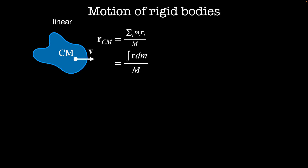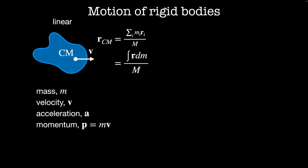For linear motion, the primary quantities we'll be considering are mass, linear velocity v, linear acceleration a, linear momentum p which equals mass times linear velocity, force which is equivalently mass times linear acceleration a or the rate of change of linear momentum, and kinetic energy which is one-half times the mass times velocity squared.